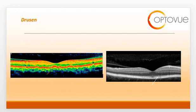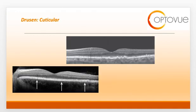On the left-hand side, you can see what soft drusen look like on an OCT. Soft drusen are larger, dome-like elevations that are irregular in shape with indistinct margins.